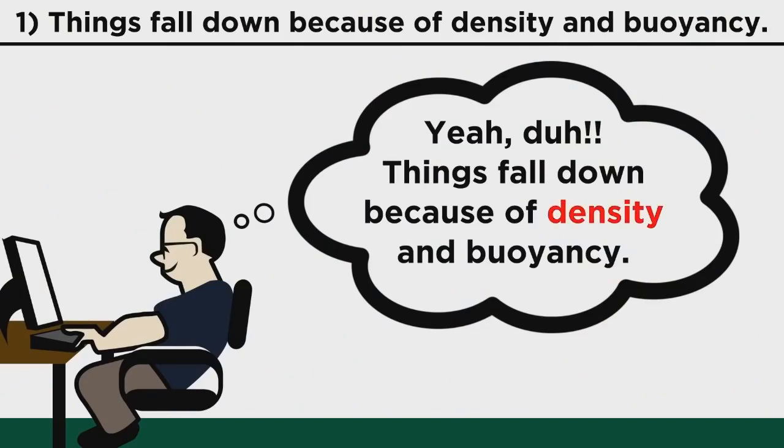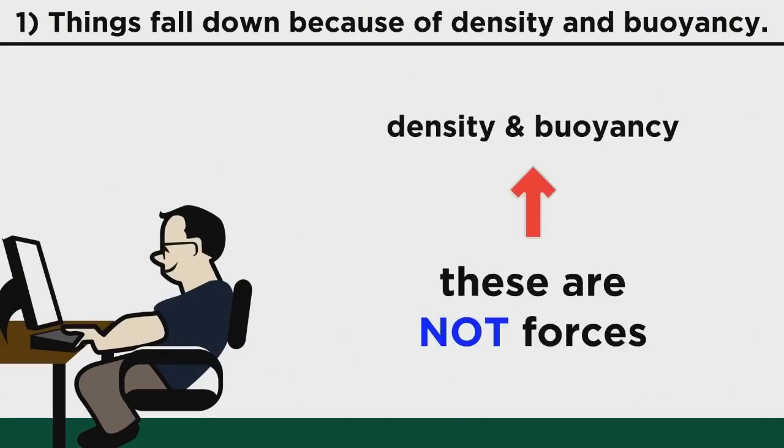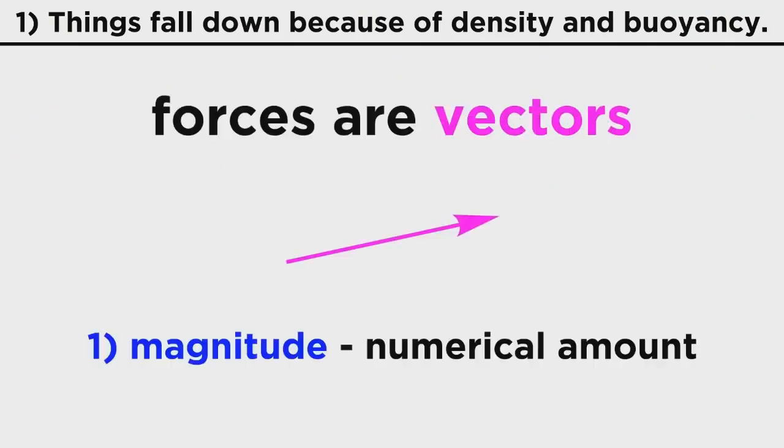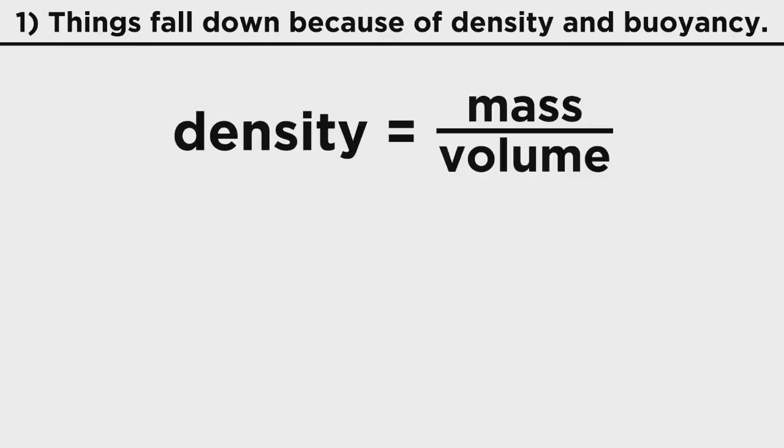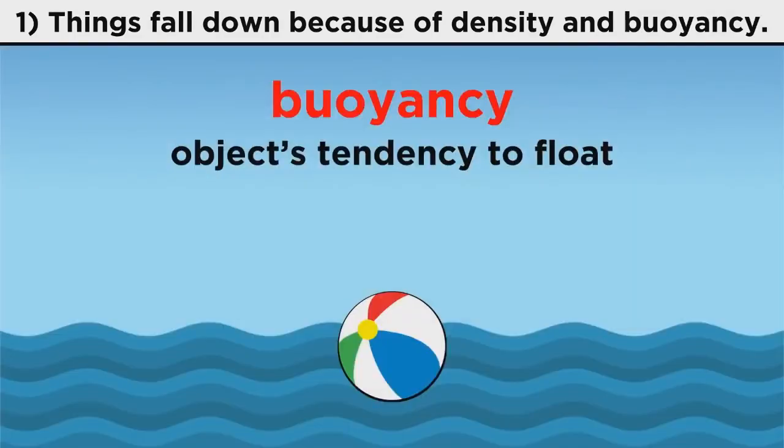Most of you address this problem by simply listing two words, density and buoyancy. Well, I hate to break it to you guys, but these are not forces. Forces are vectors. They have a magnitude, which means a numerical amount, and a direction, which means they have to point somewhere. Density is simply mass per unit volume, or how much matter sits in a particular space. It doesn't point anywhere. And buoyancy is simply a measurement of an object's tendency to float.